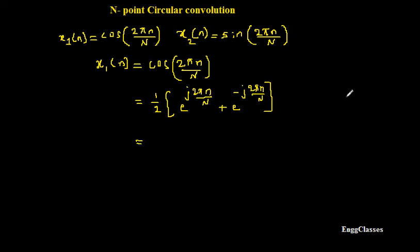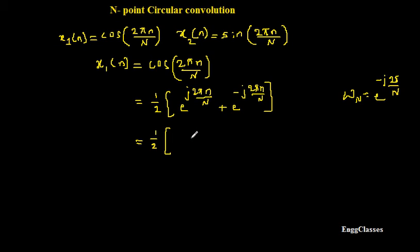Next, consider the twiddle factor W_N = e^(-j2π/N). I need to express this exponential in terms of the twiddle factor. This gives x1(n) = (1/2) * [W_N^(-n) + W_N^n], where for the first term, since the minus sign is absent, I write W_N^(-n), and for the second term I get W_N^n.